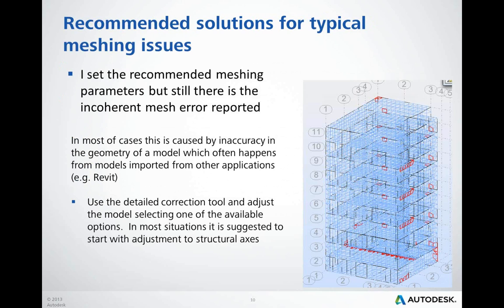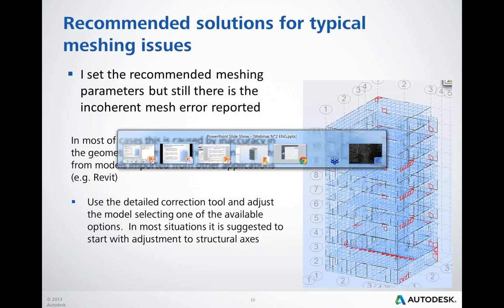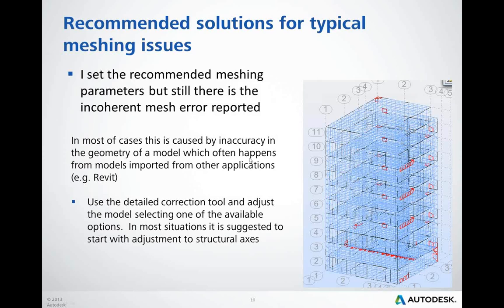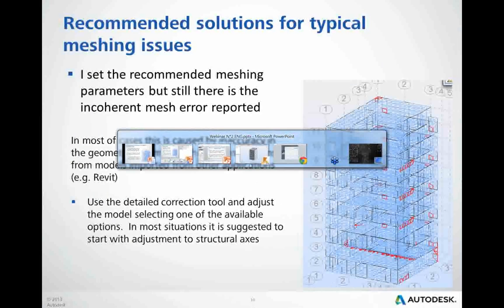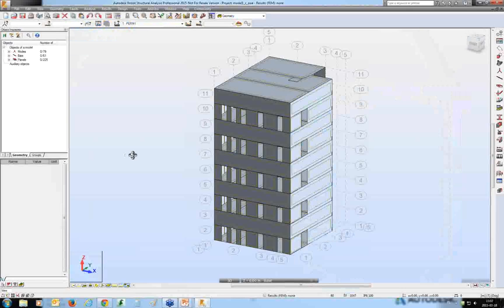Let me start with the global correction options first. I've got a model where there are several locations that need attention, and the best option to deal with all of them at the same time is to use geometry adjustment strength the structural axis. I will switch to the building model now.